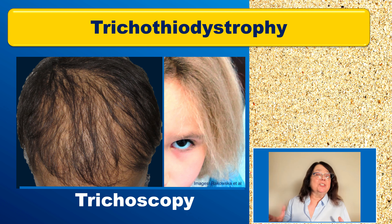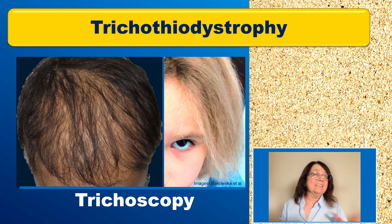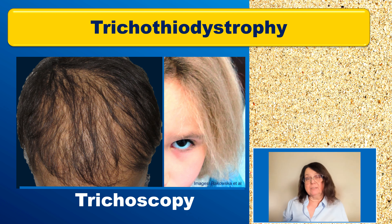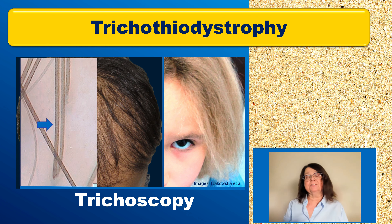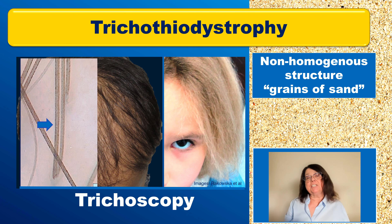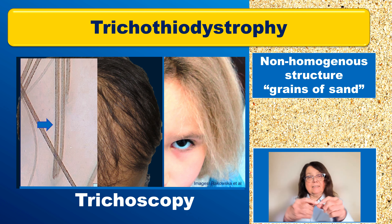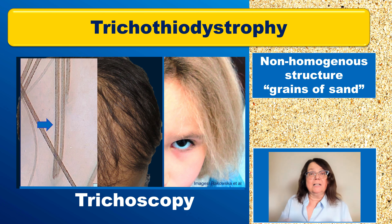Can we make the diagnosis of Trichothiodystrophy with trichoscopy? Well, yes and no — because the changes are so subtle they may be very difficult to spot, especially with a handheld dermoscope. But there are two changes which have been described. One of them: when you look at the hair shaft, the color is not uniform — it looks a little bit grainy.